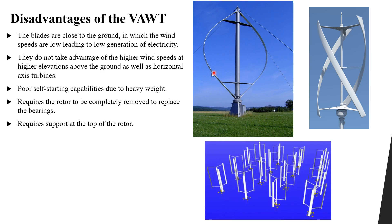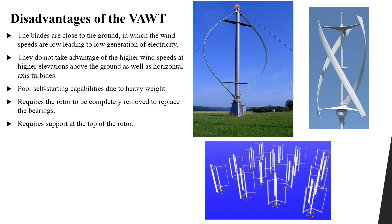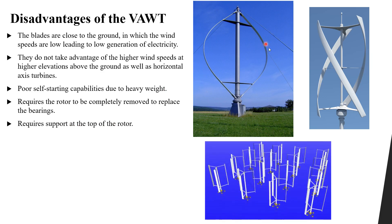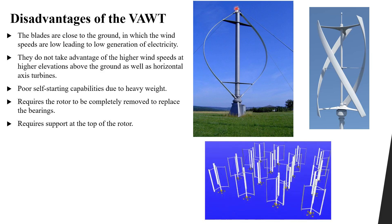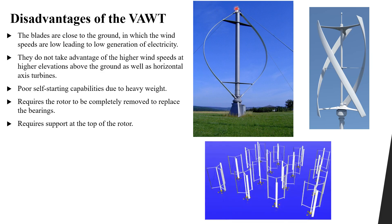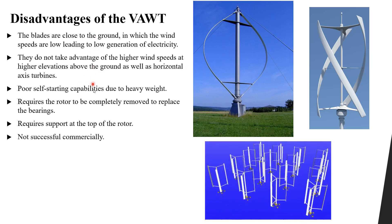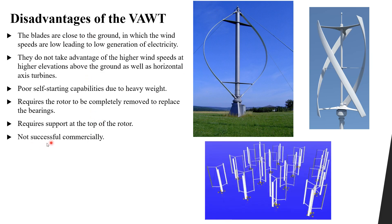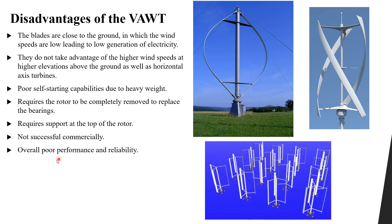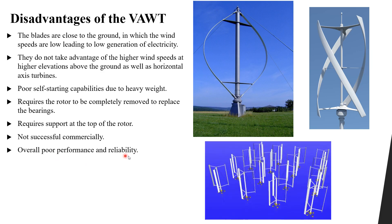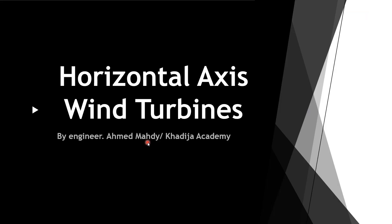Another problem is that in order to change the bearings inside the mechanical system, you need to remove all of the blades, which leads to high maintenance cost. Also, the turbine needs support structures at the top of the rotor to fix it and prevent it from falling. Due to all of these problems, the vertical axis wind turbine is not successful commercially and has overall lower performance and reliability.